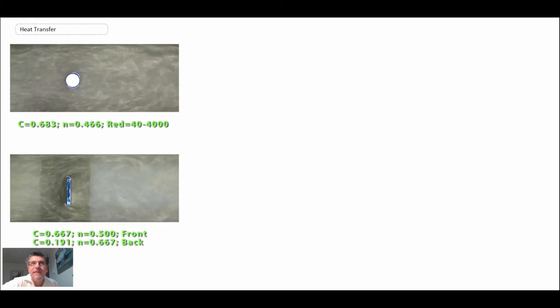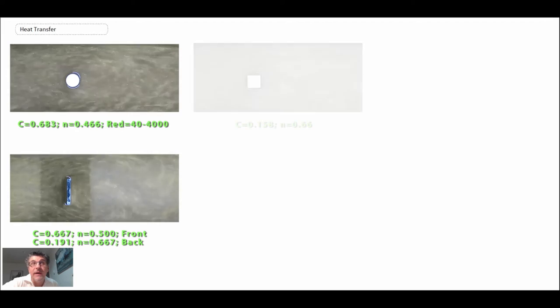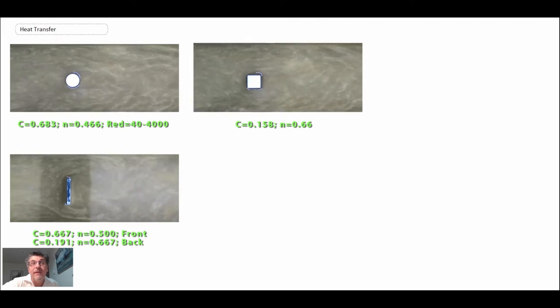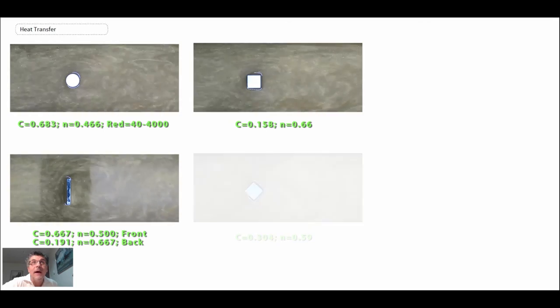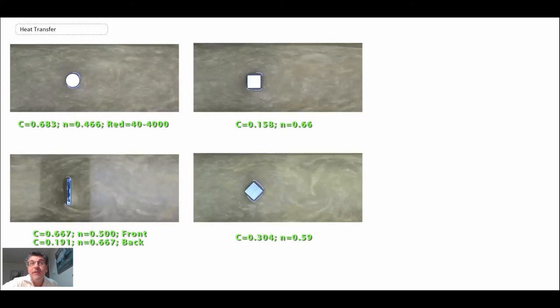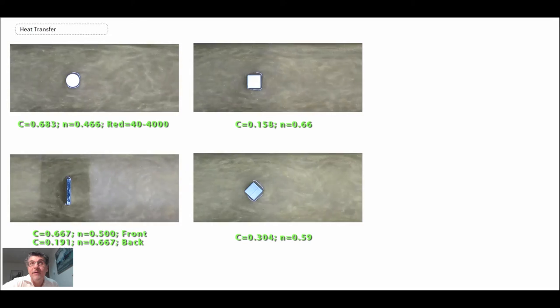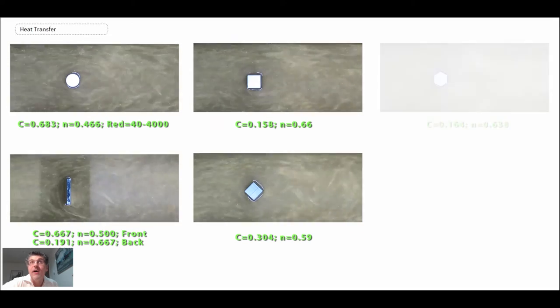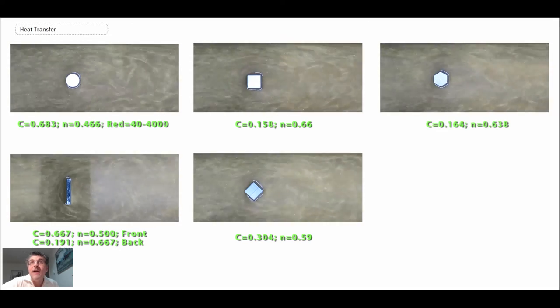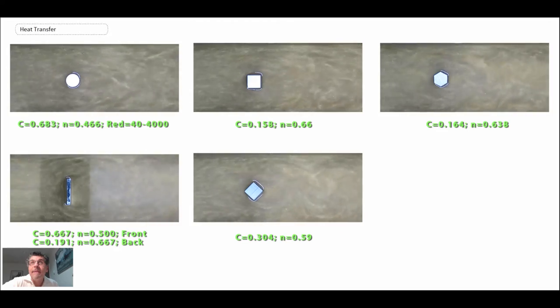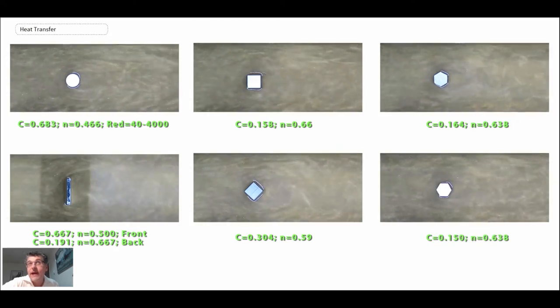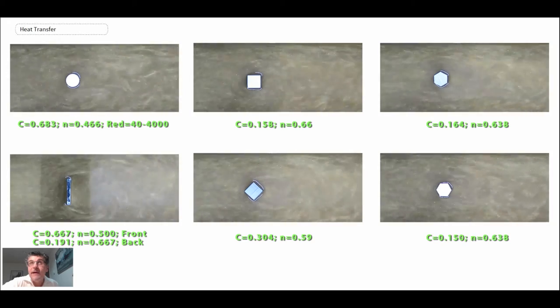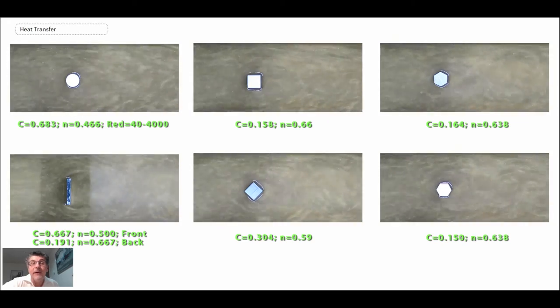This is the flat plate. Very interesting flow dynamics downstream. Massive separation and consequently the C and N values vary from the front to the back. There we see a square. A square rotated at 45 degrees. You get a very much different flow pattern downstream. Very strong oscillations. There we see a hex. And the specific C and N for the hex. And then the hex rotated at a different angle. And you can see again a very different dynamic flow pattern downstream.